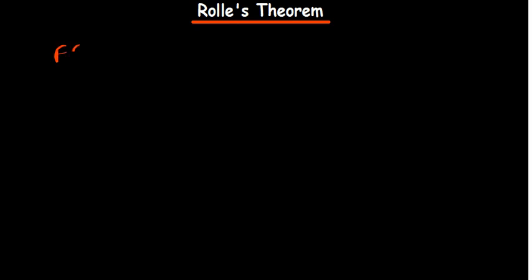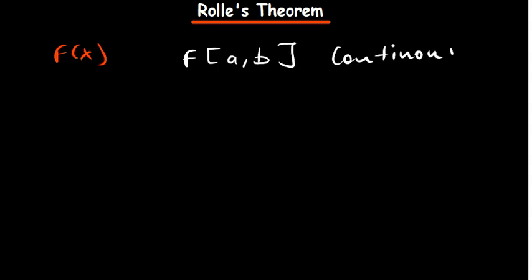In this tutorial we're going to go over Rolle's Theorem. What is it? The basic idea is when you have a function f(x), for Rolle's Theorem to apply, the function must be continuous on a closed interval [a, b]. That's the first condition: the function should be continuous on the closed interval a and b.